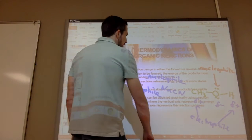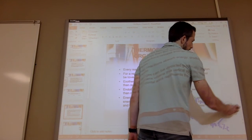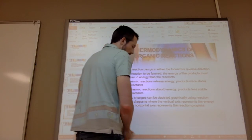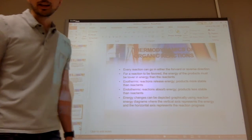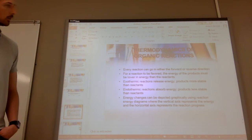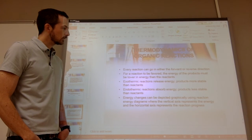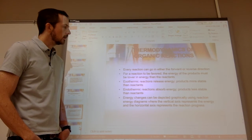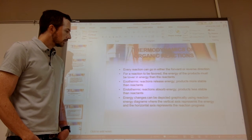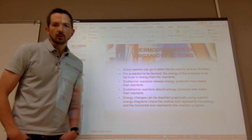Now let's look at the thermodynamics of organic reactions. Every reaction can go in either the forward or reverse direction. For a reaction to be favored, the energy of the products must be lower than the energy of the reactants. Exothermic reactions release energy — products are more stable than the reactants. Endothermic reactions absorb energy — meaning the products are less stable than the reactants. Energy changes can be depicted graphically using reaction energy diagrams, where the vertical axis represents energy and the horizontal axis represents reaction progress.